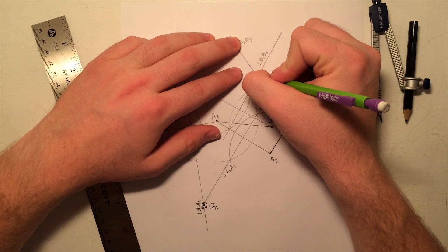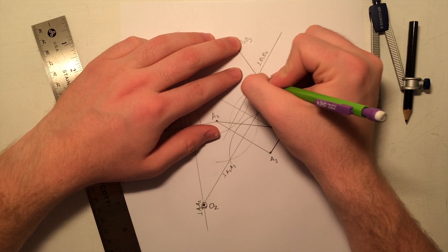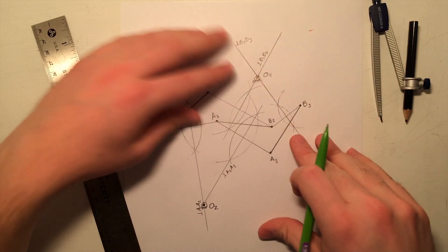Similarly, the second ground joint is located at the intersection of the B1, B2 and B2, B3 perpendicular bisectors and labeled O4.